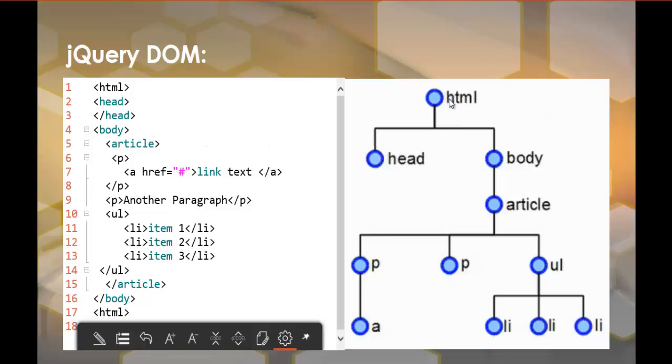Let me explain this DOM tree. Here is the HTML root and it is having two children: head and body. Body is having one child, that is article. Article is having three children: two paragraphs and one unordered list. The unordered list is having three children—three list items. This tree gives you a clear representation of how your page looks, and this is how your browser is going to store internally in the form of a DOM tree.